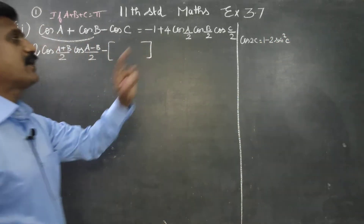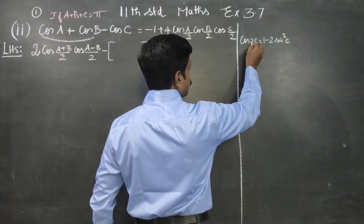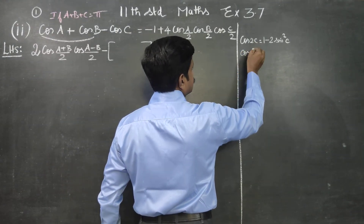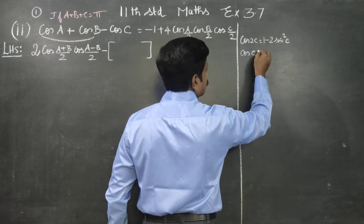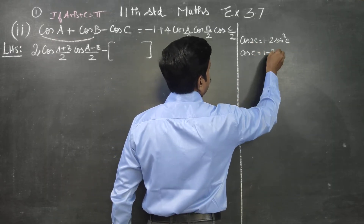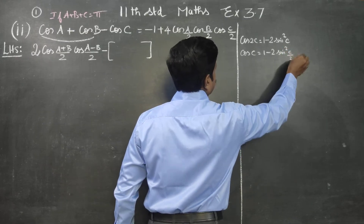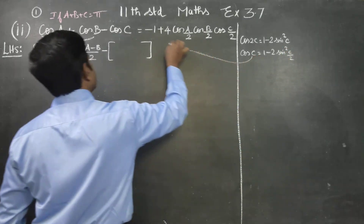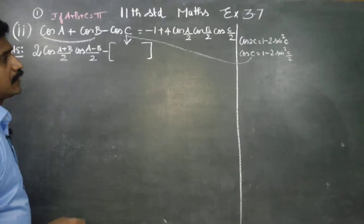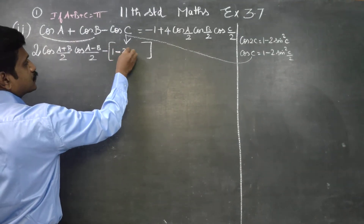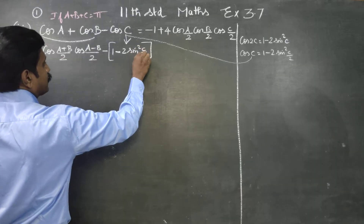This is the multiple angle formula. I am going to use the sub-multiple angle formula: substitute 2C = C, so C becomes C/2. This is the sub-multiple angle formula. So we get 1 minus 2 sin²(C/2).